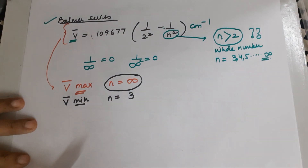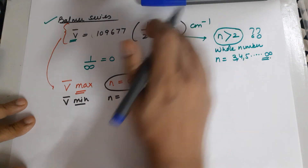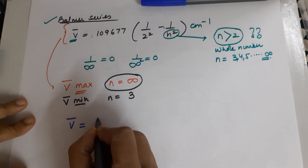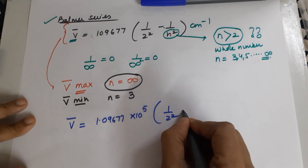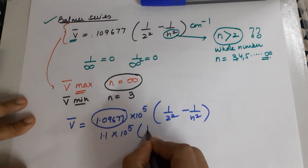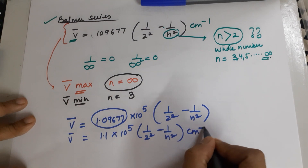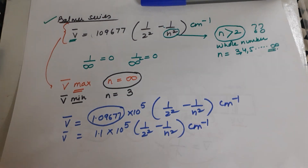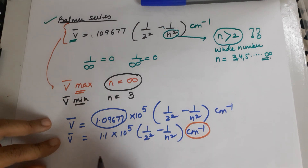The Balmer formula can be rewritten as: V̄ = 1.09677 × 10⁵ × (1/2² − 1/n²) cm⁻¹, which can be rounded to 1.1 × 10⁵. To convert from cm⁻¹ to m⁻¹, we need to change the constant value.